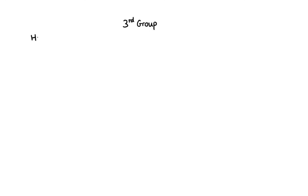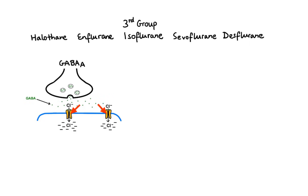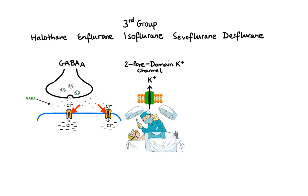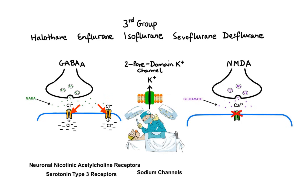The third group consists of halogenated volatile anesthetics: halothane, enflurane, isoflurane, sevoflurane and desflurane. In contrast to group 1 and 2 drugs, group 3 drugs have a more diverse mechanism of action and are more potent at producing immobility. Volatile anesthetics produce unconsciousness via different GABA-A receptor subunits than those targeted by group 1 drugs. Many two-pore-domain potassium channels activated by group 3 anesthetics appear to highly affect immobility rather than anesthesia. Like group 2 drugs, volatile anesthetics also inhibit NMDA receptors. A wide variety of other ion channels are also sensitive to volatile anesthetics, including neuronal nicotinic acetylcholine receptors, serotonin type 3 receptors, sodium channels, mitochondrial ATP-sensitive potassium channels, and hyperpolarization-activated cyclic nucleotide gated channels.